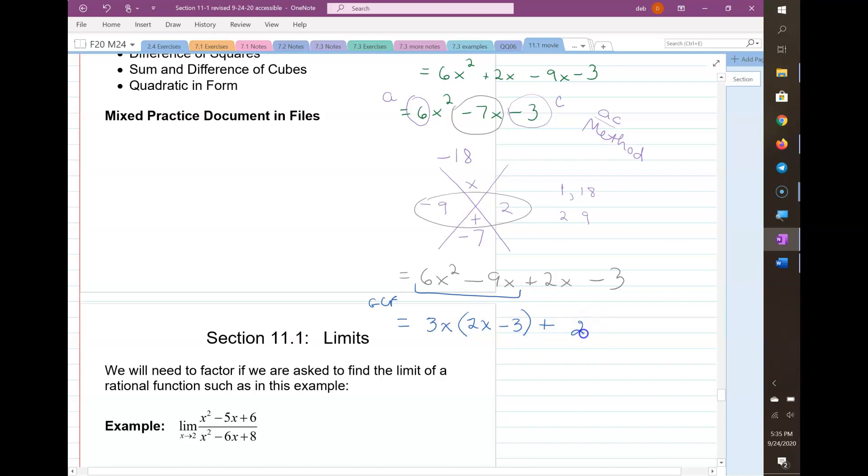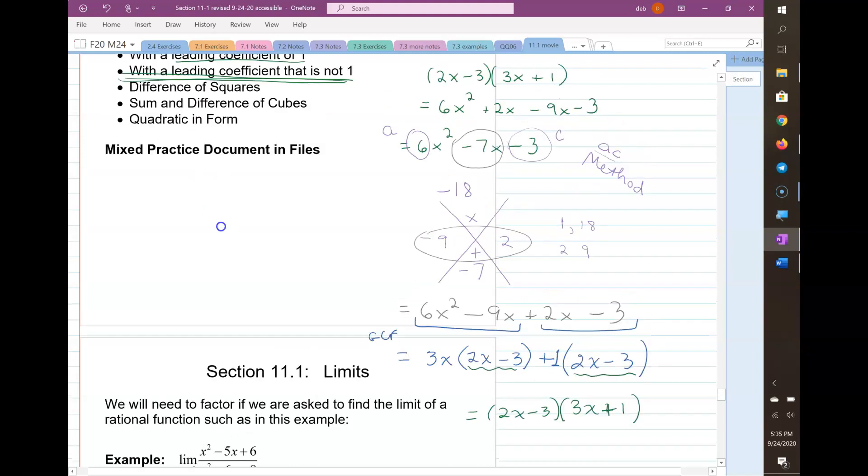And then the next two guys don't have any common factor except 1. So if it's helpful to write the 1, then you can. And then we say, look, I have a common binomial. So I'm going to factor out the common binomial. And what's left? 3x + 1. So that's the AC method if you'd like to use that.